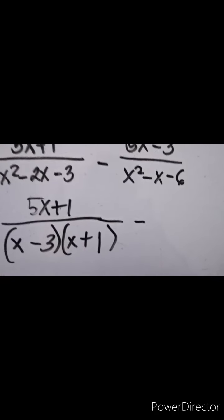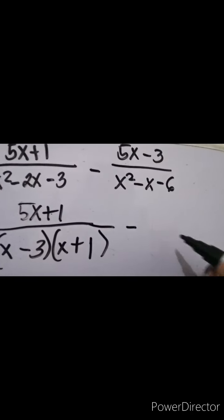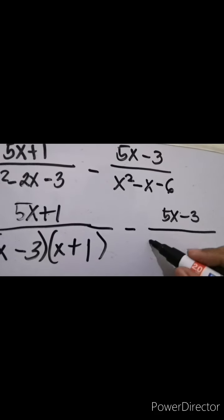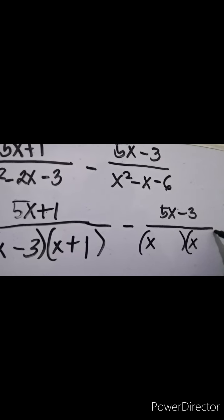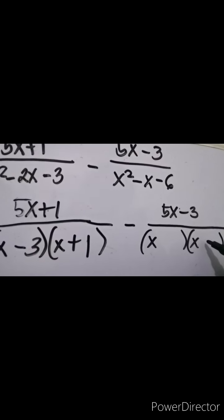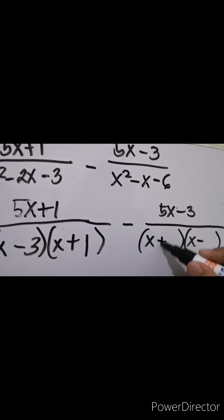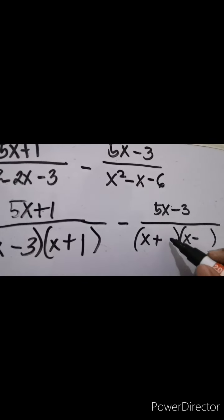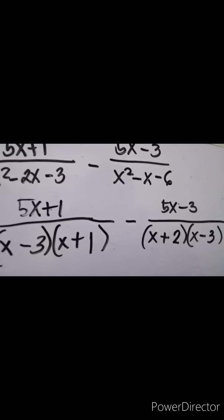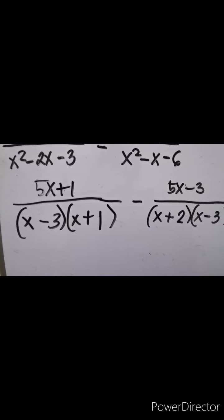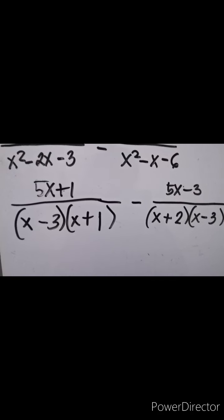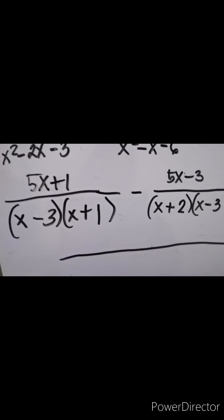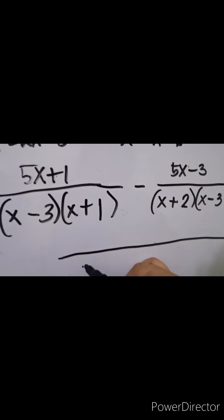Next, factor out x squared minus x minus 6. By trial and error, just copy 5x minus 3 and factor the denominator. We have two x's, one negative and one positive. The factors of negative 6 are negative 3 and positive 2. Based from the denominators of the rational expressions, what is common between them? That will be our LCD. As we can see, x minus 3 is common to both.